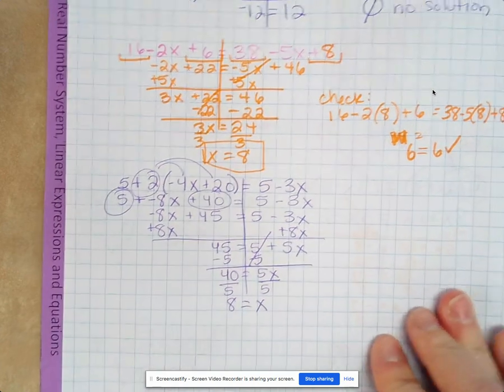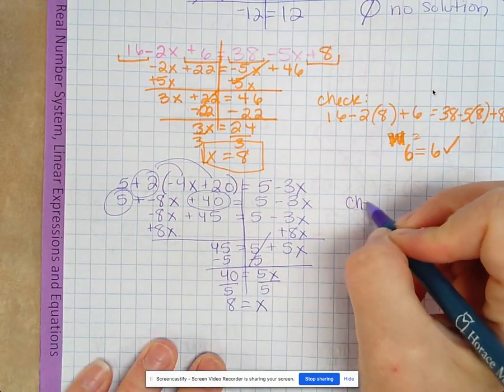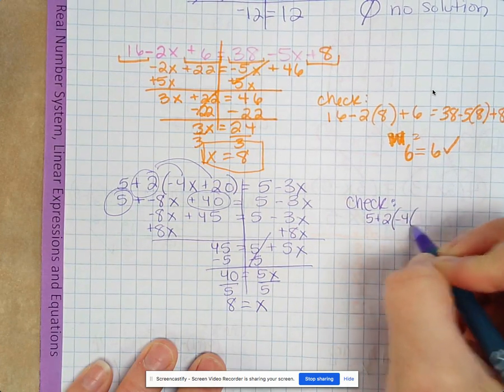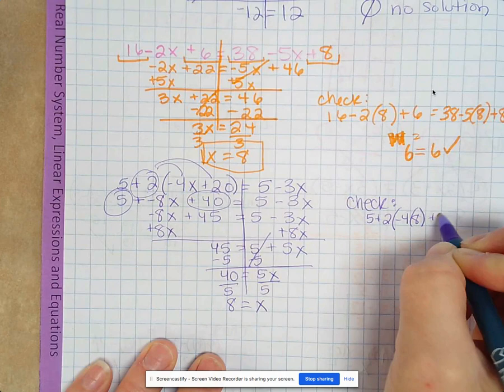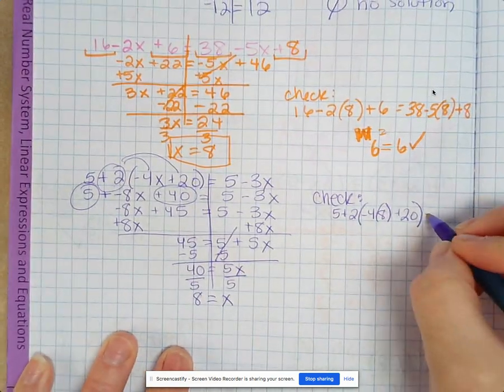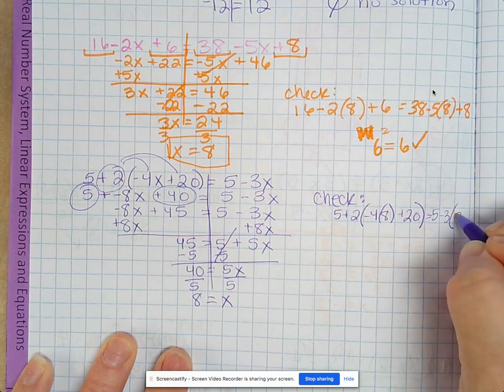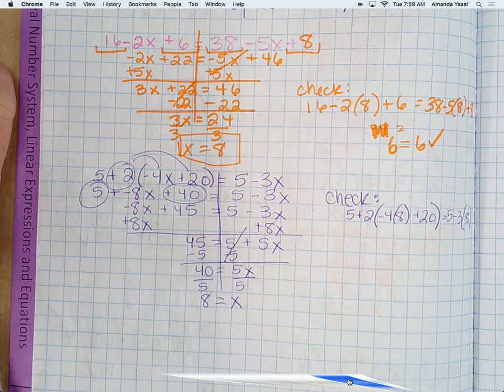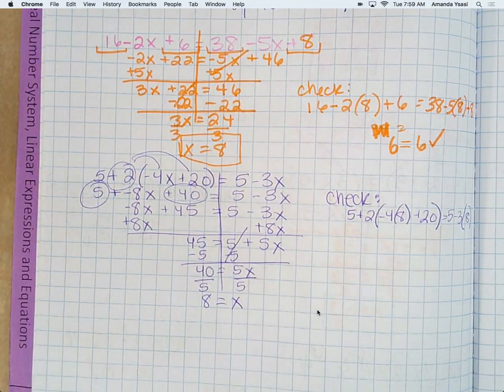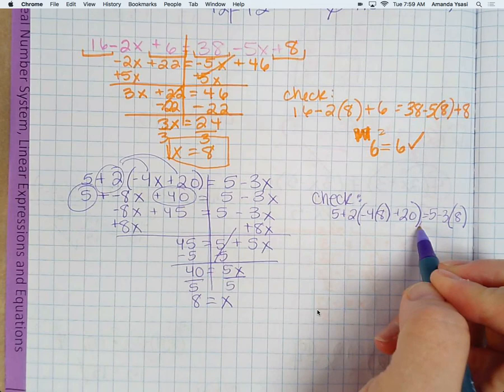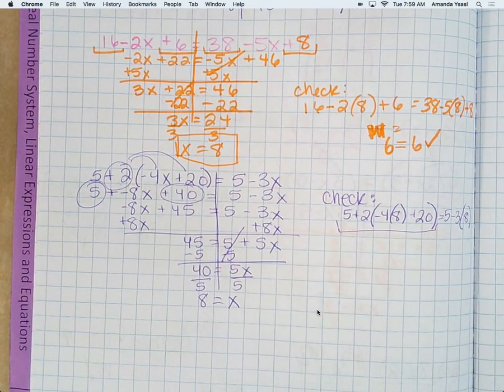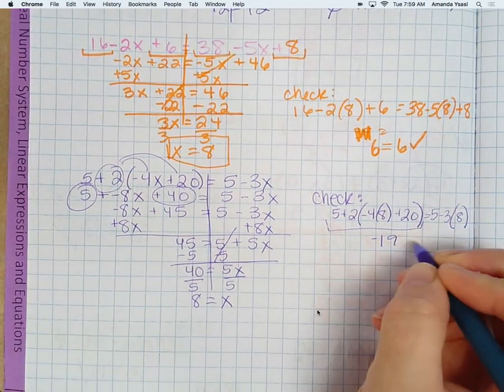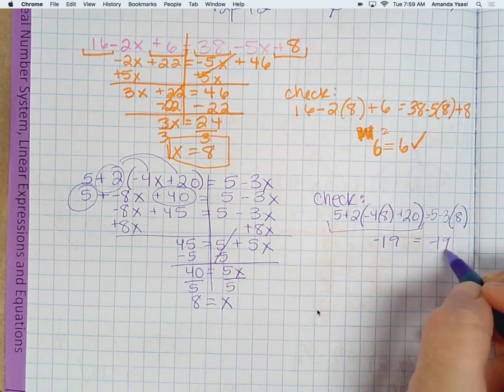And then we check it. So we check it. It would be 5 plus 2 parentheses negative 4 times 8 plus 20 close parentheses equals 5 minus 3 times 8. Carter, what did you get? Left side? Negative 19. And then the other side? Good. So we got it right.